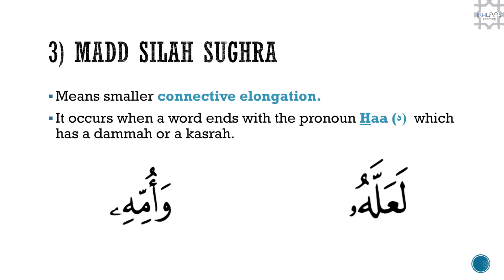Number 3, mad sila sugra, means smaller connective elongation. It occurs when a word ends with the pronoun haa which has a damma or a kasra. For example: La'allahu wa ummihi.